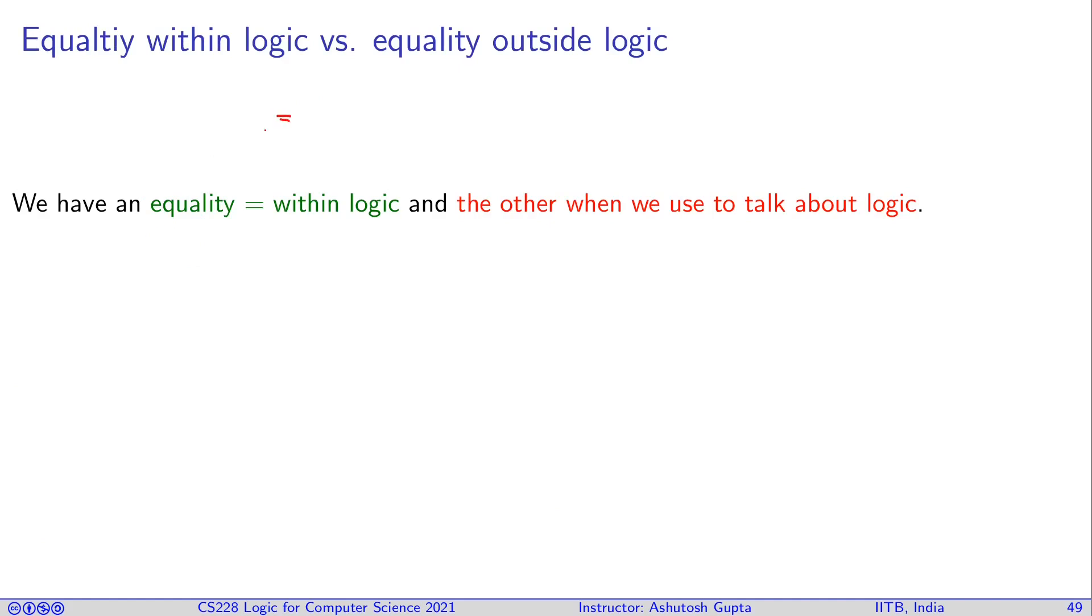We have introduced an equality sign within the logic, and we have been using the equality symbol in other contexts whenever we define something. Both are distinct objects. This equal symbol in our logic is just a string right now; we will give interpretation to it. Please be mindful of this dual use of the same symbol.